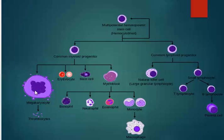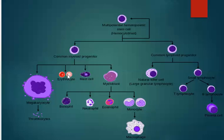In the myeloid section we have megakaryocytes, erythrocytes, mast cells, and myeloblasts. The megakaryocyte is the cell which gives rise to thrombocytes or platelets — pieces that are broken off from the megakaryocytes. Erythrocytes, of course, are the red blood cells, with the hemoglobin component carrying oxygen, and they are not nucleated.